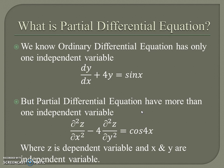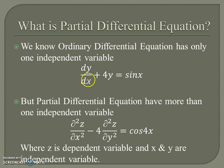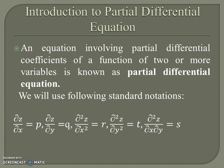Now, what is a partial differential equation? First we will discuss the difference between ordinary differential equations and partial differential equations. An ordinary differential equation has only one independent variable — for example, in this equation only X is the independent variable and Y is the dependent variable. But in a partial differential equation there is more than one independent variable — for example, X and Y are independent variables and Z is the dependent variable. An equation involving partial differential coefficients of a function of two or more variables is known as a partial differential equation.